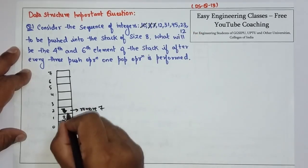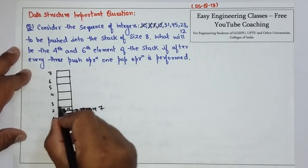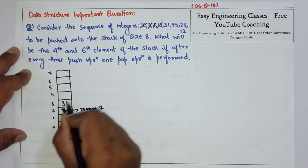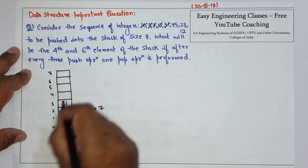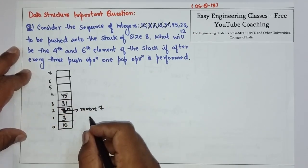Then comes 12. So, add 12 here. Then 31. Then 45. Now, again 3 push operations are completed.